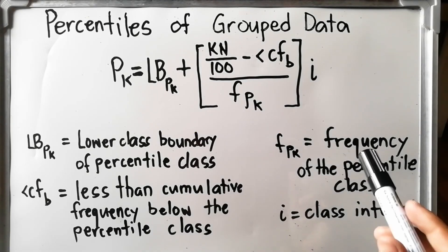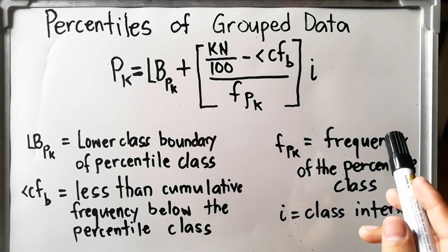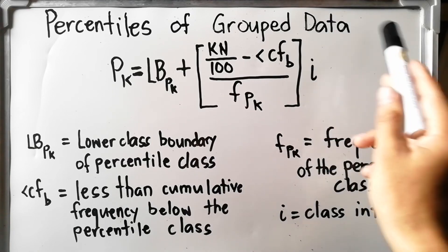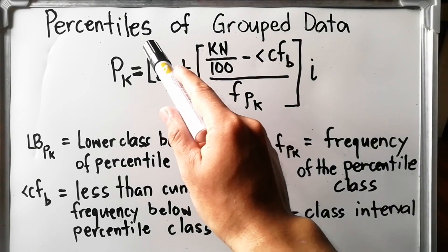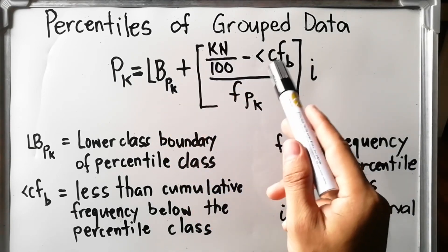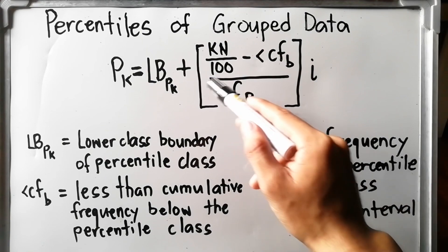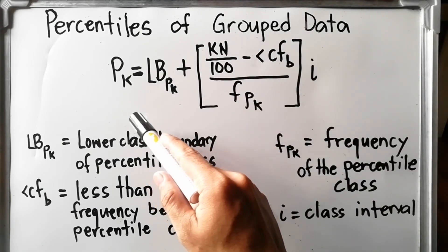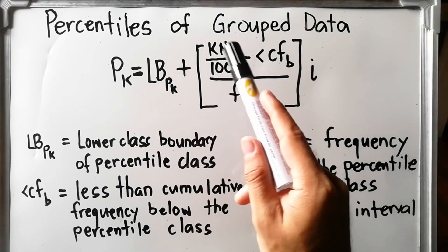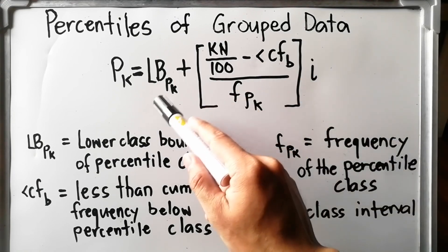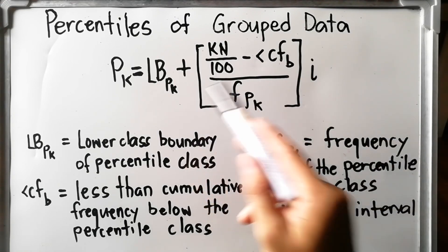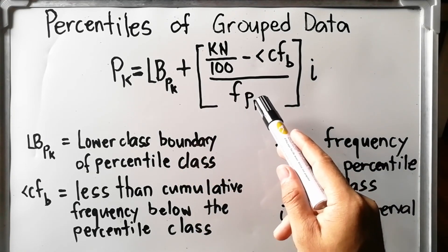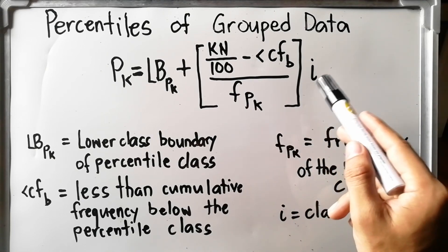Hi everyone, welcome back to my YouTube channel. Today we will talk about percentiles of group data. Percentiles are score points that divide the distribution into 100 equal parts. For group data, percentiles are the same with quartiles and deciles, since that is the sum of the lower class boundary and the fractional part of the class interval size.